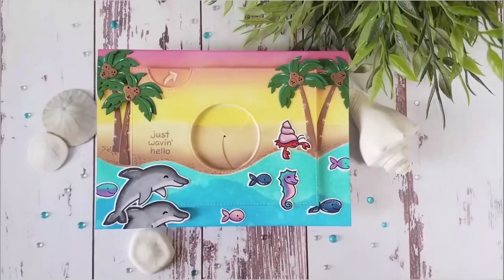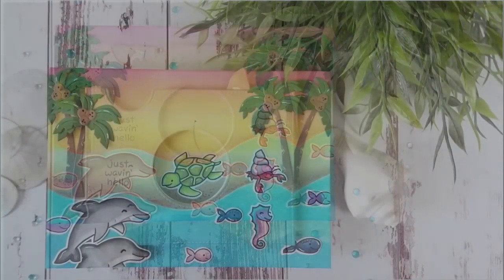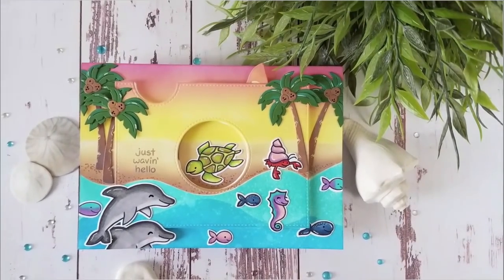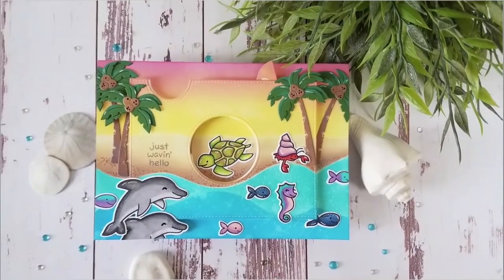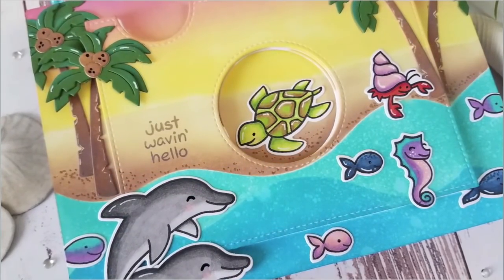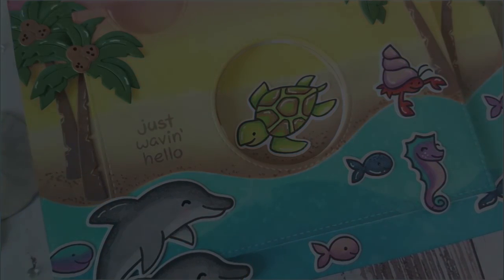Hi everyone, welcome to another Lawn Fawn video. This is Joy. For today's project I am using the Magic Iris die on a 5x7 card base. I am using a 5x7 card base because I wanted a large ocean scene. I'm going to be doing some ink blending as well as some stenciling. So let's get started.